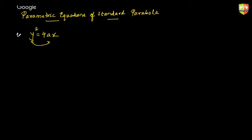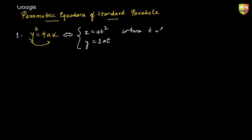For y² = 4ax, the same equation can be written equivalently as x = at² and y = 2at, where t is a parameter. That means if you keep changing your parameter t, you keep getting different points on the curve y² = 4ax. If you try to eliminate t using these two equations, you will end up getting the equation of the parabola y² = 4ax.